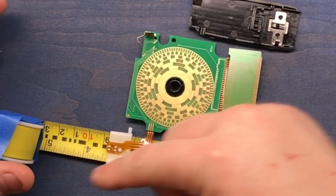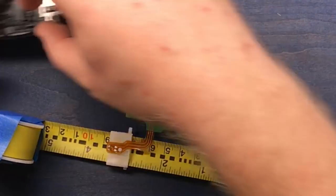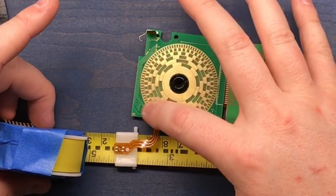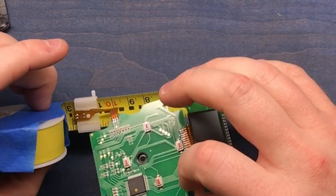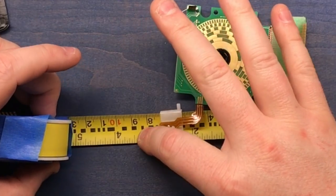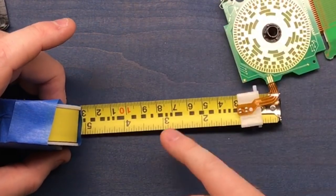So as you extend the tape and move the tape around, the chip is keeping track of that. And along the whole length of the tape, we have this.